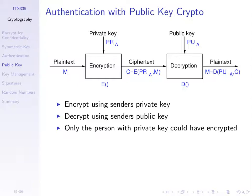We send the ciphertext to B. To decrypt, we use the public key of A — we must use the other key in the key pair. It was encrypted with the private key of A, so we can only decrypt with the public key of A. When we decrypt and it successfully decrypts, what does that mean?